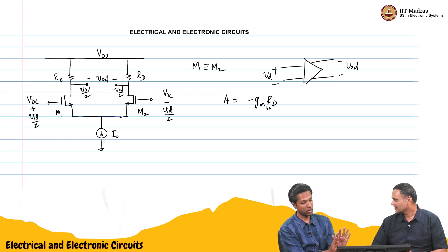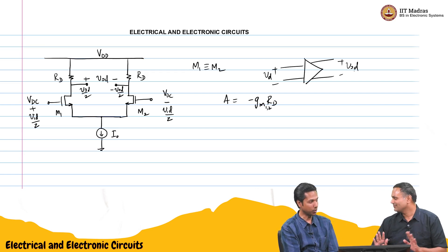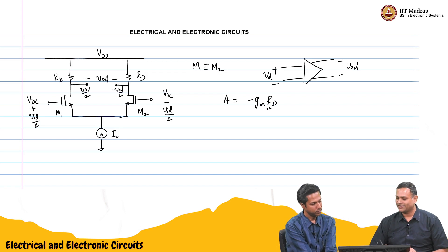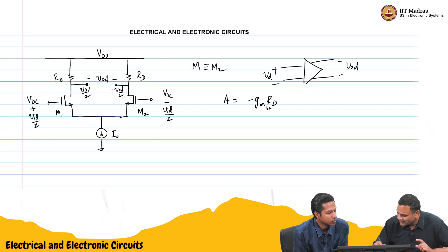But essentially, whatever the common mode signal, we want to reject that. That should not reflect in the output. That is correct. So, this is your MOSFET differential amplifier.